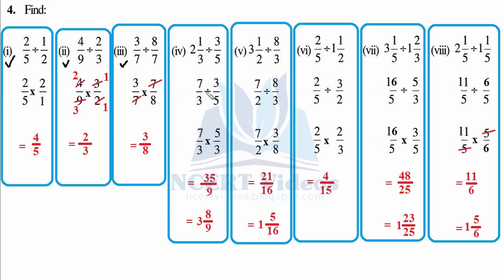Now 7/3 — flip it — it becomes 5/3. Then 7 times 5 is 35 and 3 times 3 is 9, giving 35 over 9 — improper. So 9 times 3 is 27, remainder 8, giving 3 and 8/9.